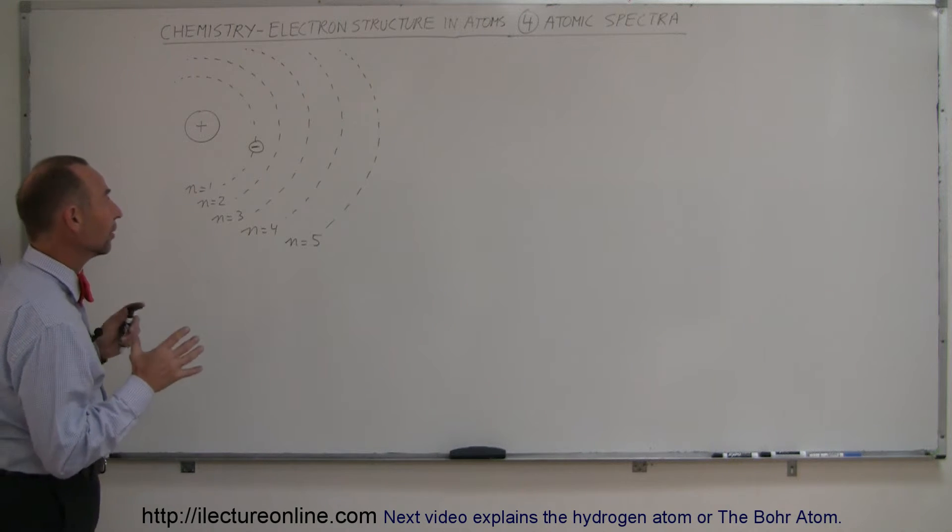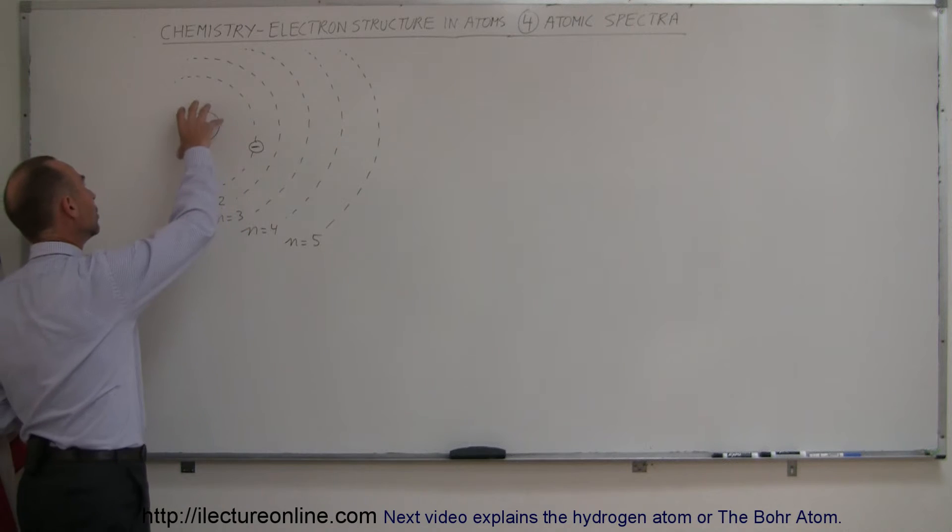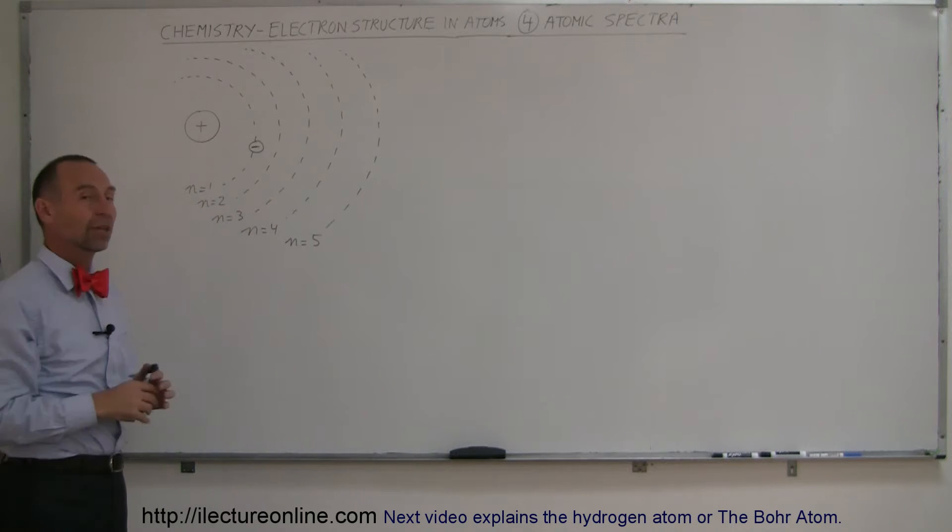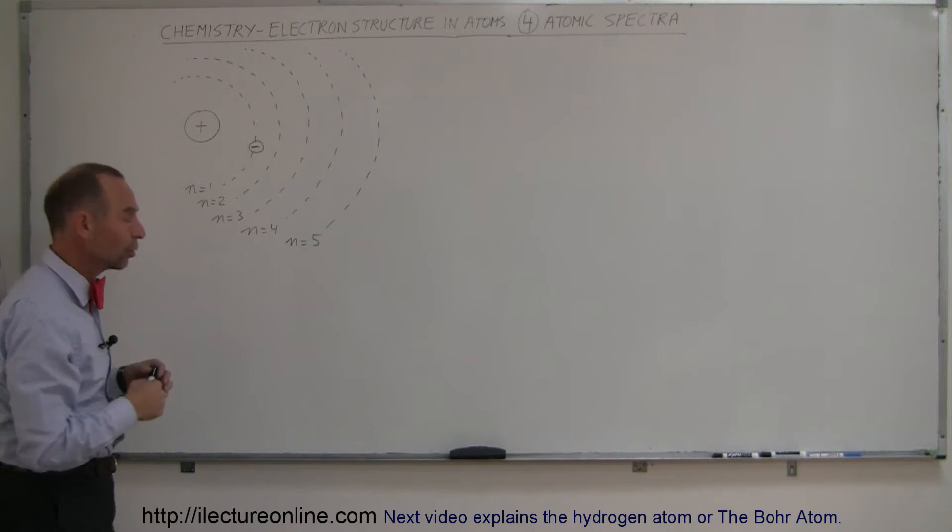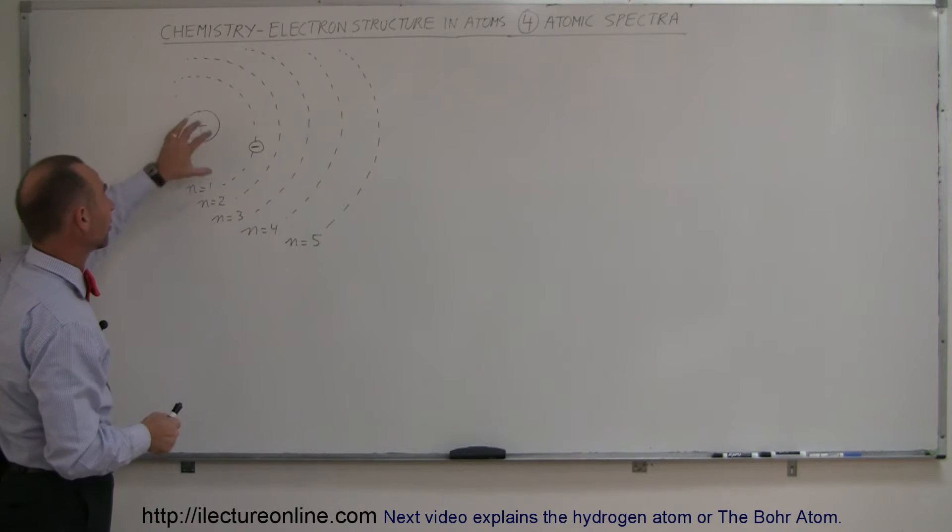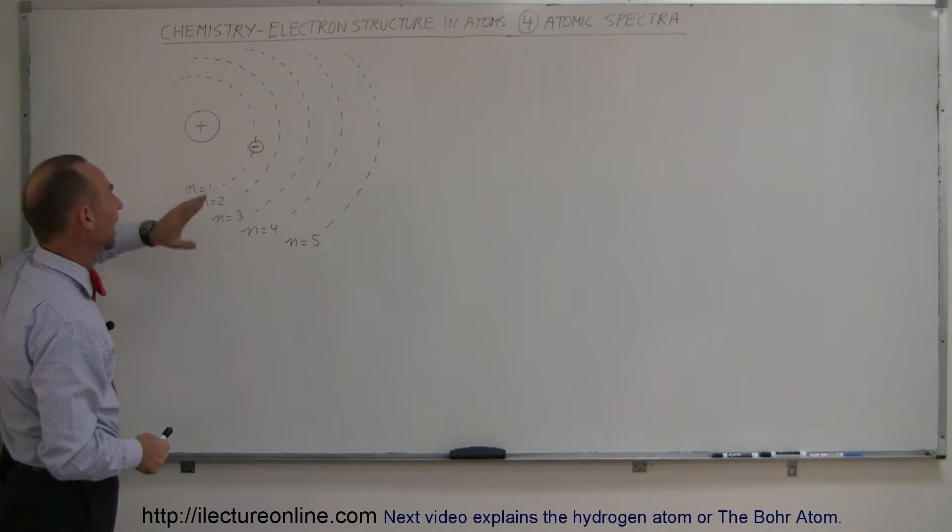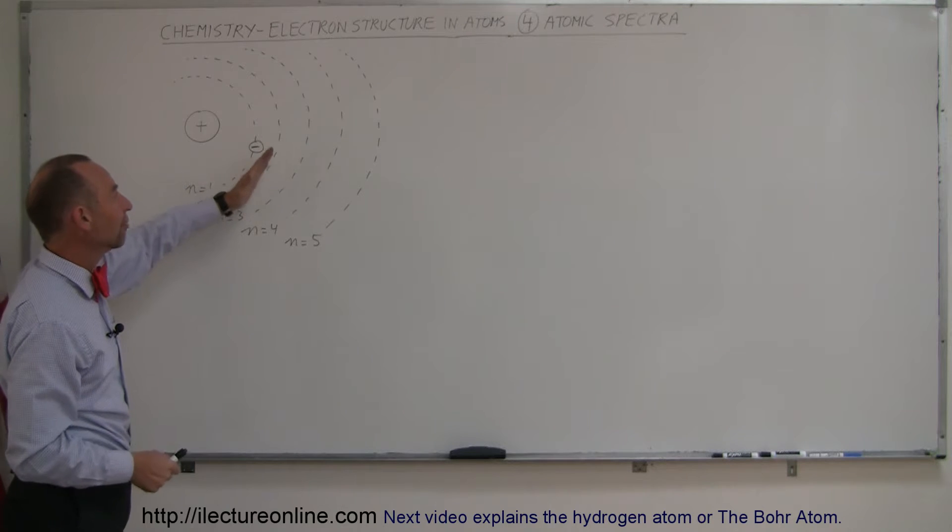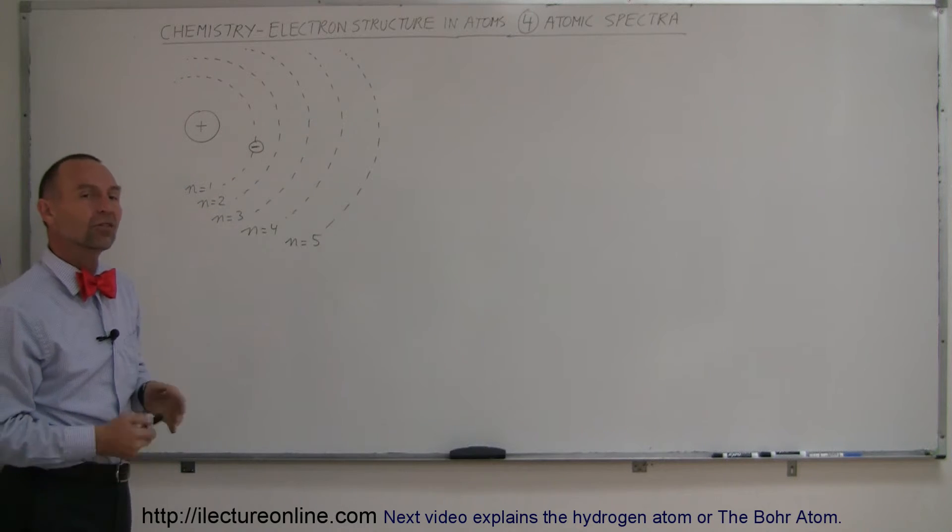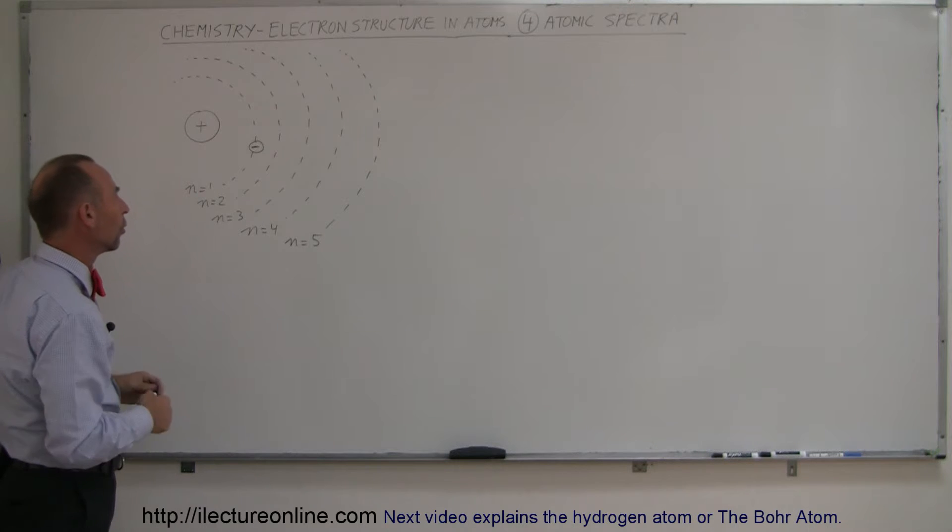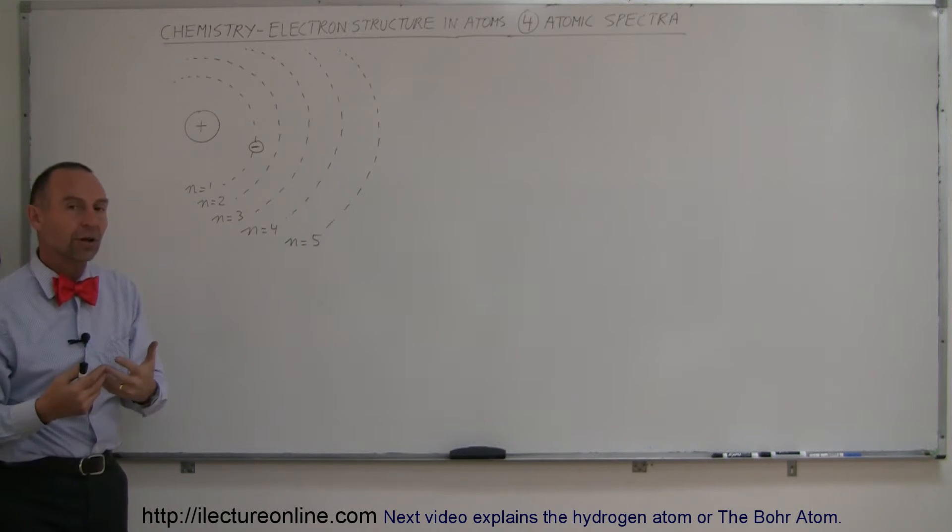So imagine an atom that has a nucleus and the nucleus is positively charged because it contains protons and neutrons. And around the nuclei we have places where electrons can exist and those are called orbitals or energy levels where electrons can exist.